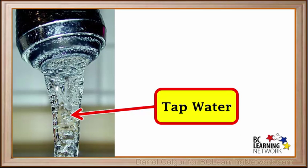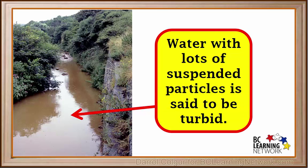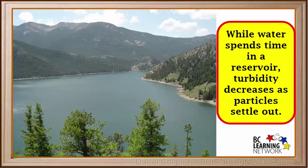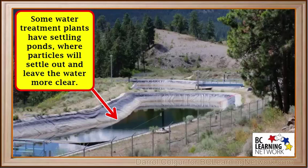Gravity separation is not only used in mining, but it's also used to help purify our drinking water. Water with lots of suspended particles is said to be turbid. While water spends time in a reservoir, turbidity decreases because particles have a lot of time to settle out. Some water treatment plants have settling ponds where particles will settle out and leave the water more clear.